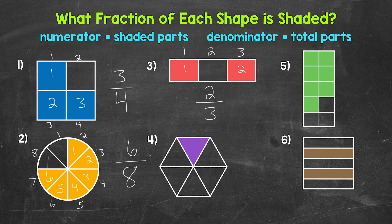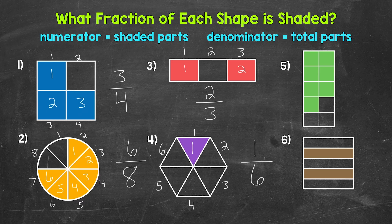Moving on to number four. Let's start with the denominator. So how many total equal parts has the whole been divided into? One, two, three, four, five, six. So six is our denominator. Now we need the numerator — how many equal parts are shaded? One. So one is our numerator. One out of six parts are shaded. Our fraction is one over six, which we say one sixth.